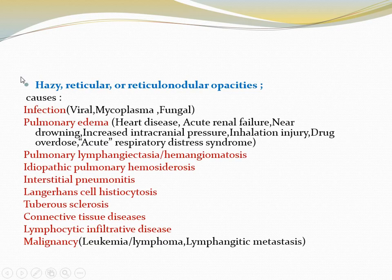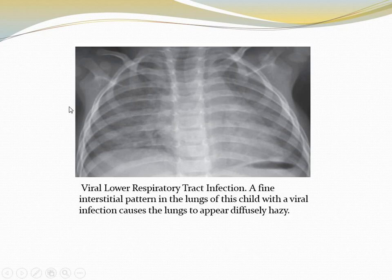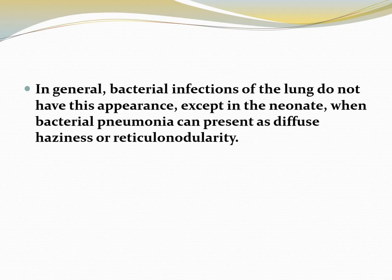Hazy reticular or reticulonodular opacity causes include infection, pulmonary edema, pulmonary lymphangiectasia, hemangiomatosis, idiopathic pulmonary hemosiderosis, interstitial pneumonitis, Langerhans cell histiocytosis, tuberous sclerosis, connective tissue disease, lymphocytic infiltrative disease, and malignancy like leukemia, lymphoma, or lymphangitic metastasis. In viral lower respiratory tract infection, there is a fine interstitial pattern causing the lungs to appear diffusely hazy. In general, bacterial infections do not have this appearance except in the neonate, when bacterial pneumonia can present as diffuse haziness or reticulonodularity. High resolution CT can be used to better evaluate interstitial and airway abnormalities in pediatric patients; low-dose technique with limited coverage are advised.